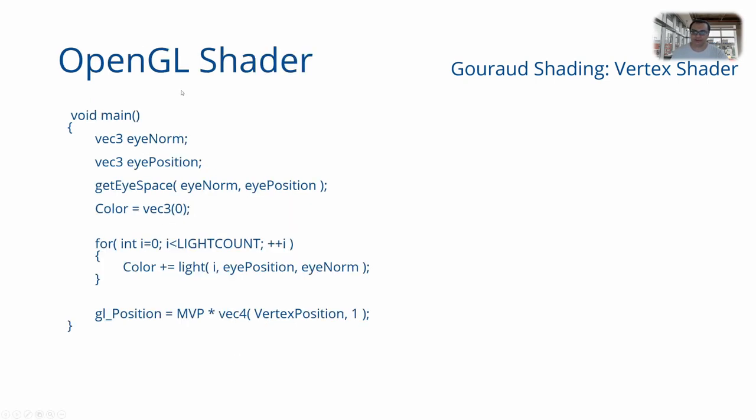Finally, we have the main function of the shader. What is called I space here we call VCS. It first figures out the normal and the position of the surface point or vertex that was input to the shader in VCS. Then it initializes the output color variable to 0,0,0, and calls the light function for every light source and adds that to the color.